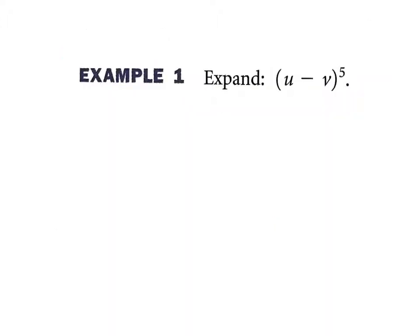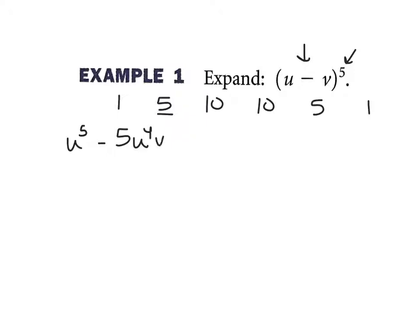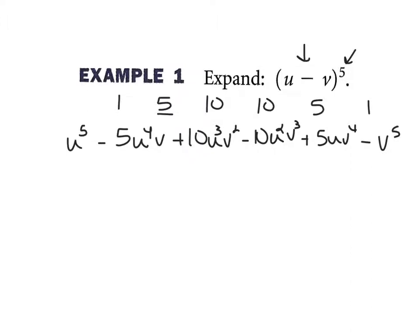Let's try a problem. This one says expand that to the fifth power. Looking back at the triangle, my coefficients were: one, five, ten, ten, five, one. Because it's the fifth power, I know there are six terms. It's going to start with u to the fifth. If you have a minus, it's going to make every other term alternate signs. So my second term is minus five — getting the five from the triangle — u to the fourth, v. Plus ten, u cubed, v squared. Minus ten, u squared, v cubed. Plus five, u, v to the fourth. And finally minus v to the fifth. Everywhere there's an odd v exponent it's negative, because odd exponents keep things negative — that's why they alternate.